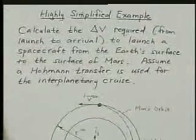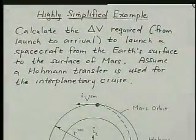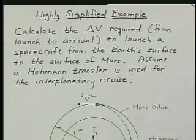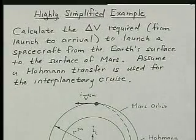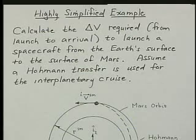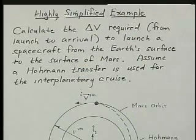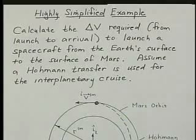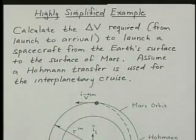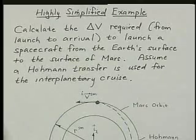Let's look at a highly simplified example. We're not even going to need specific values for the sphere of influence, but just as a rough number, the sphere of influence of the Earth is just under one million kilometers. The sphere of influence for Mars and Venus are about 0.5 and 0.6 times a million kilometers respectively.